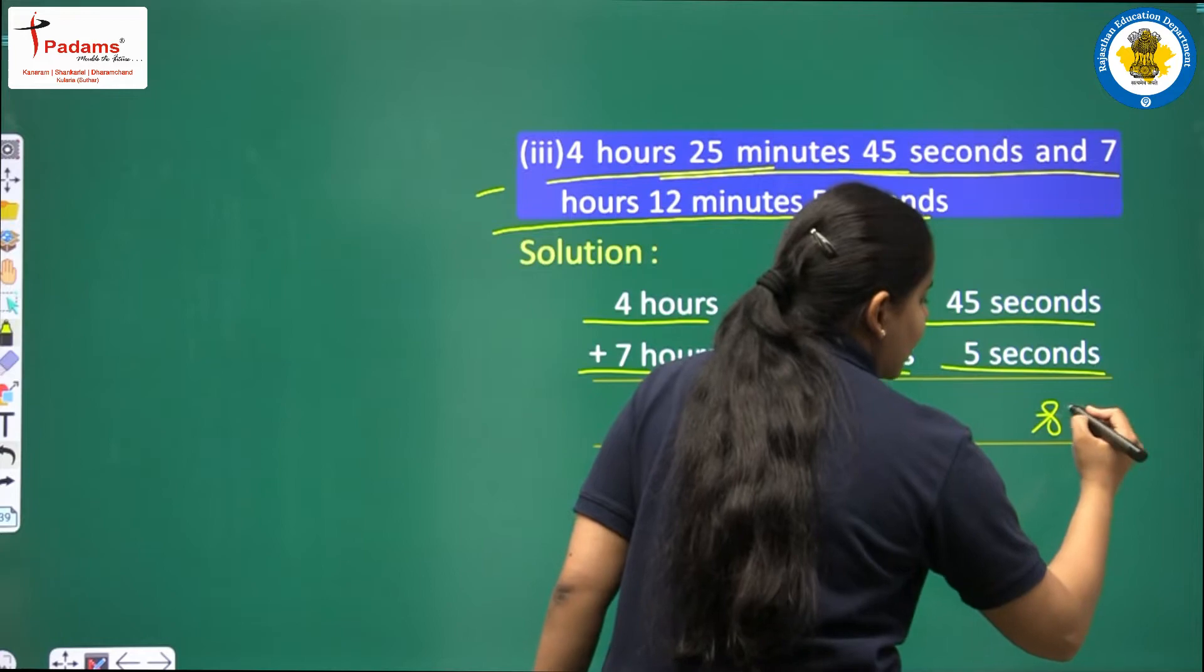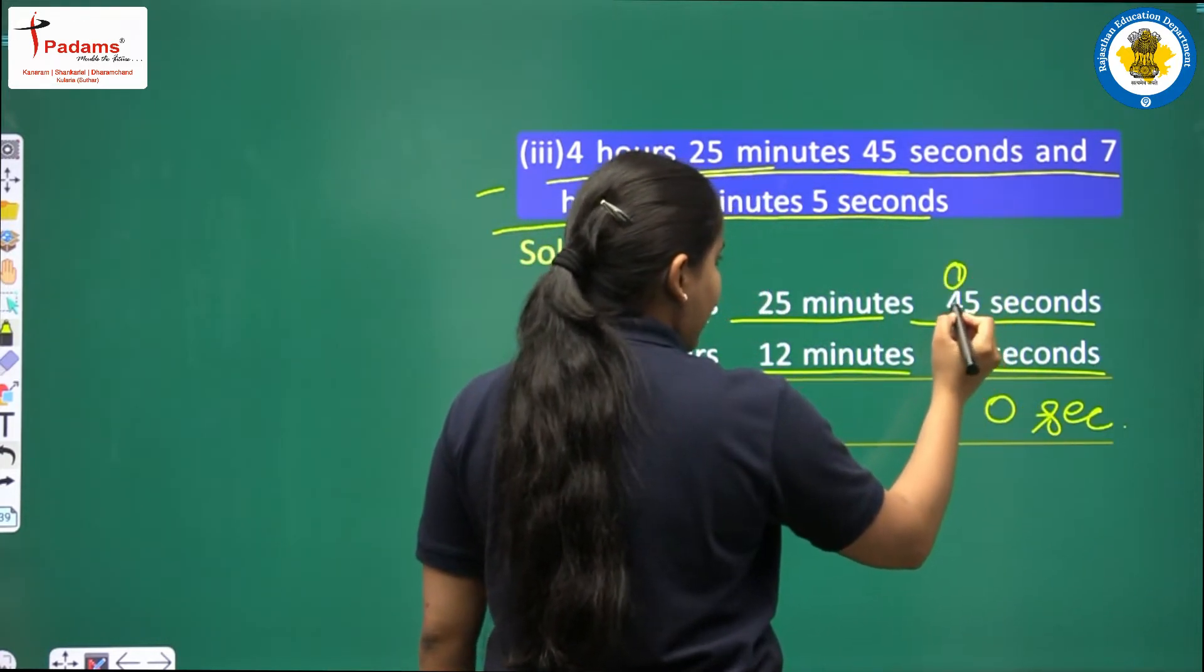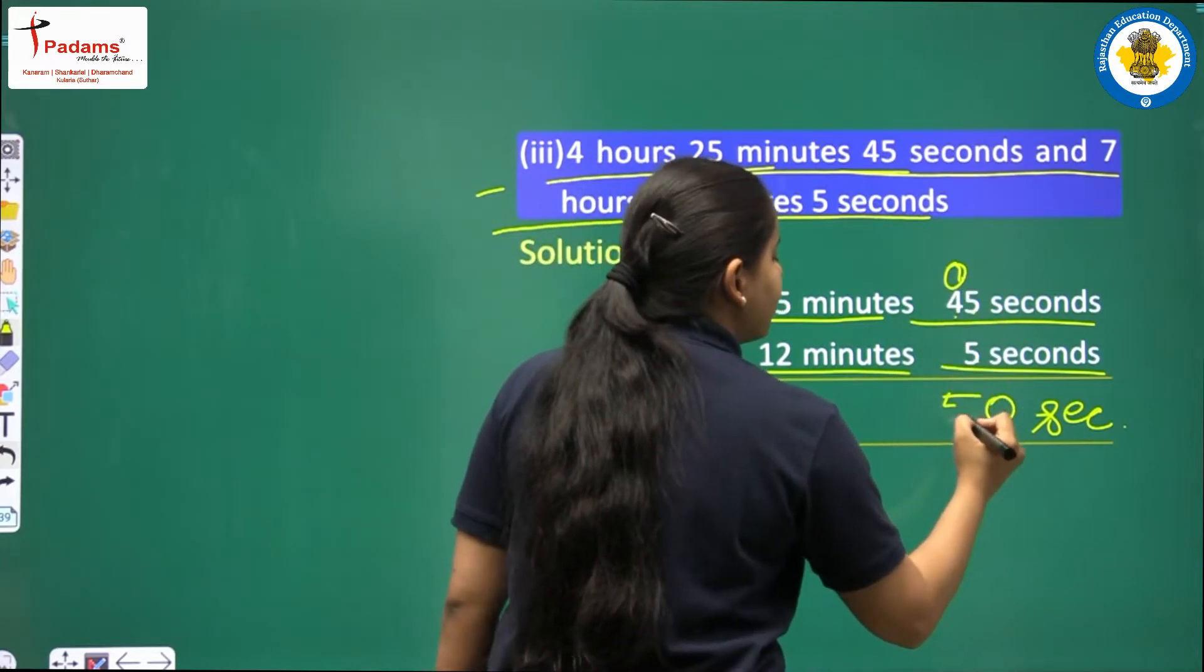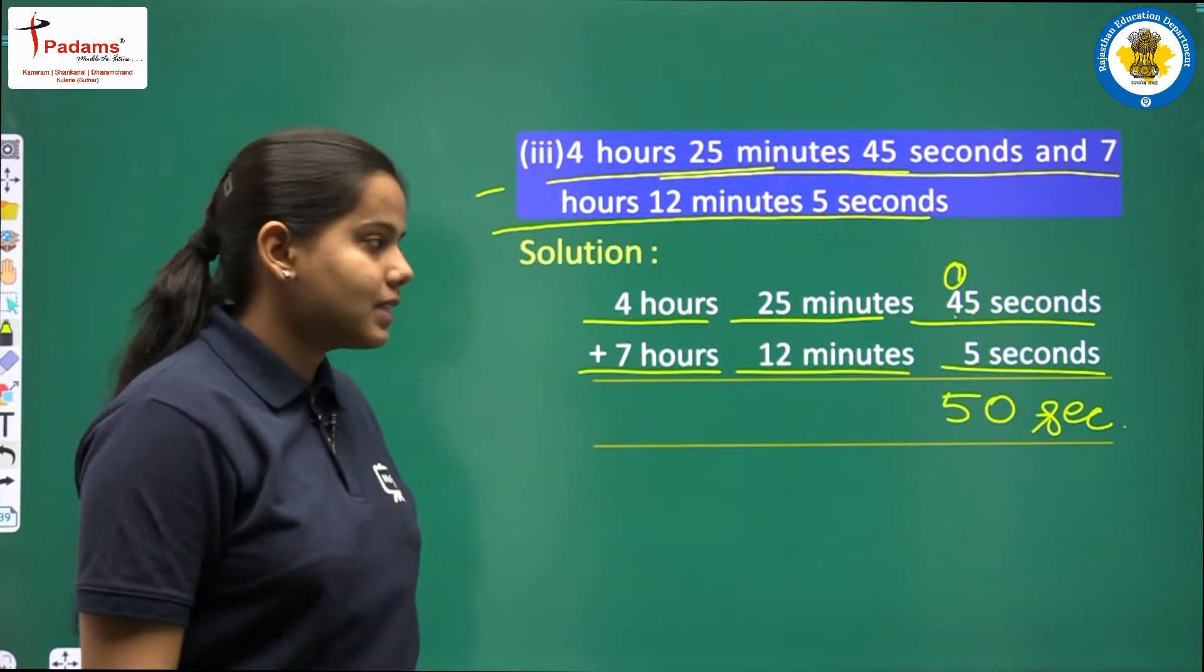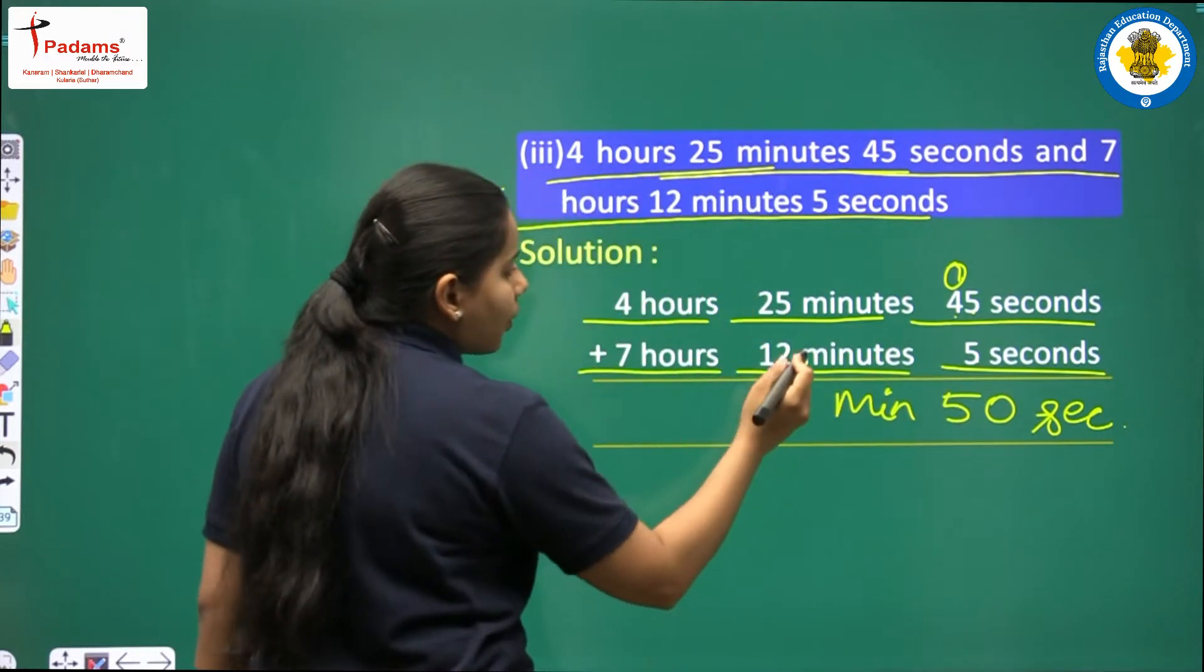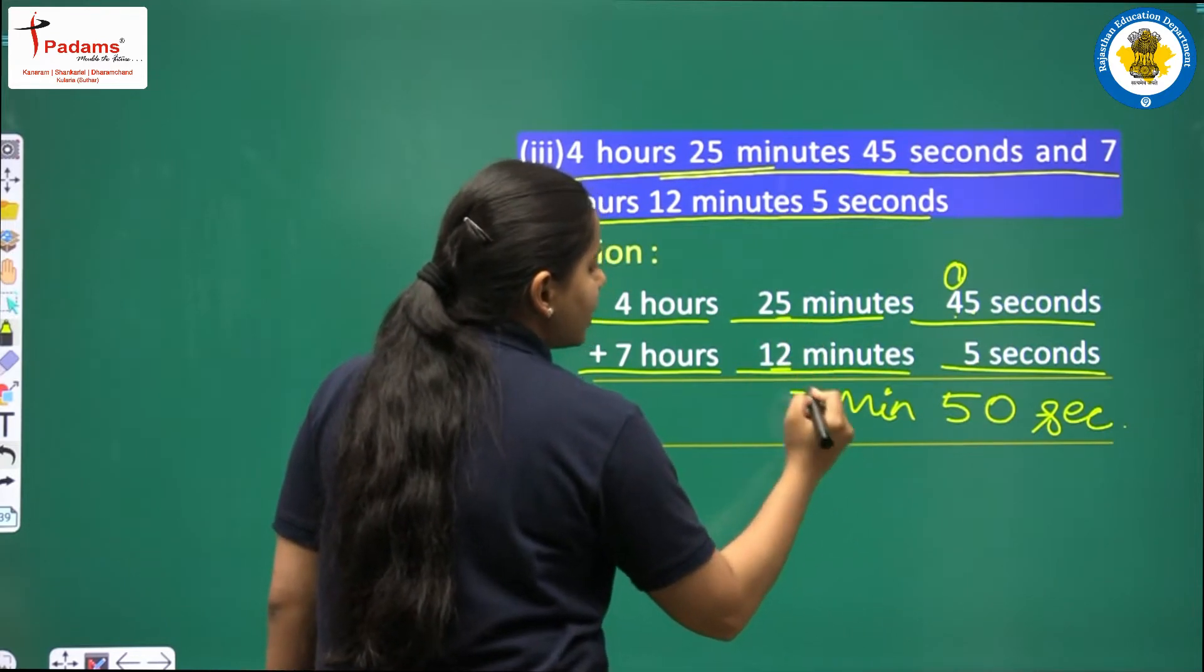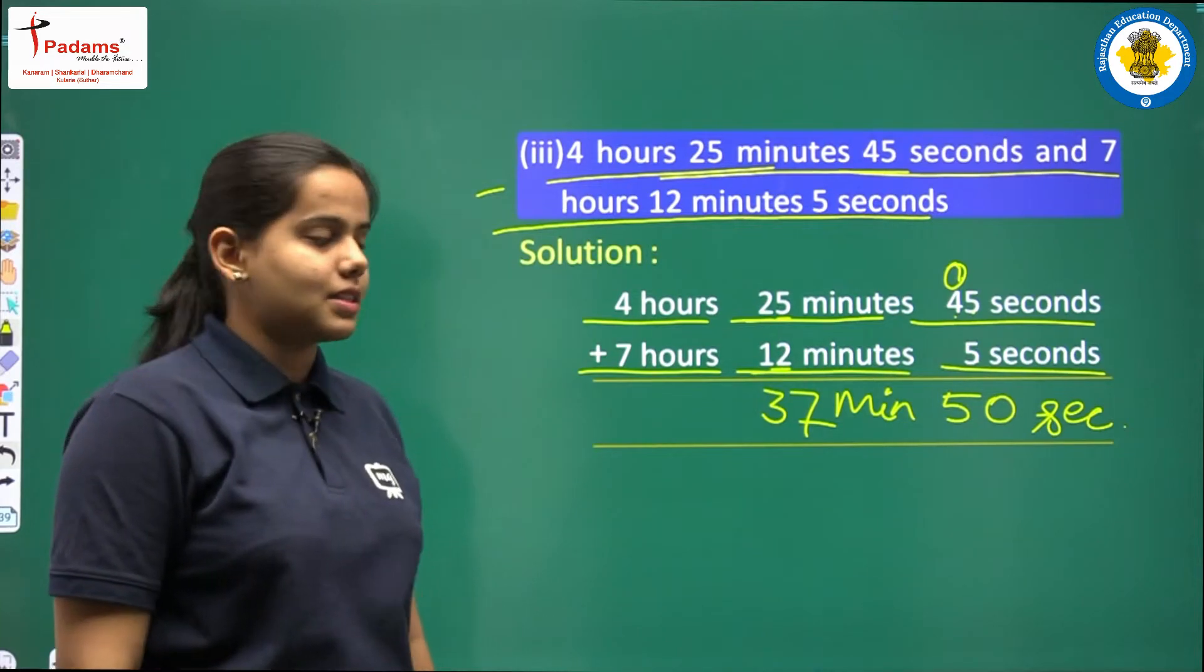We start from seconds. 5 plus 5 is 10. 1 will carry over. So 4 plus 1 here we will get 50. So 50 seconds is the answer for seconds. Now for minutes let us solve, 5 plus 2 is 7, 2 plus 1 is 3. So here we have got for minutes 37 as an answer.